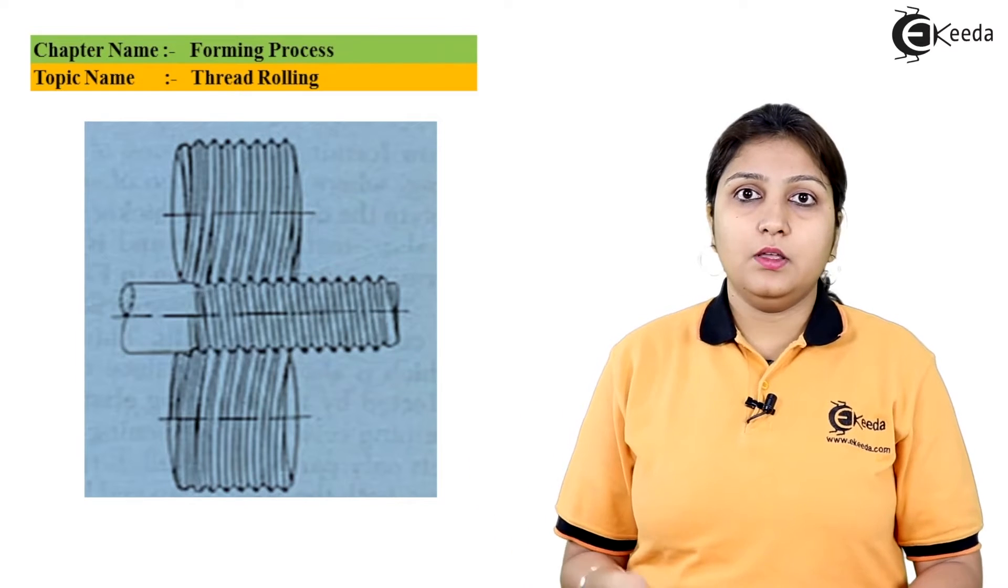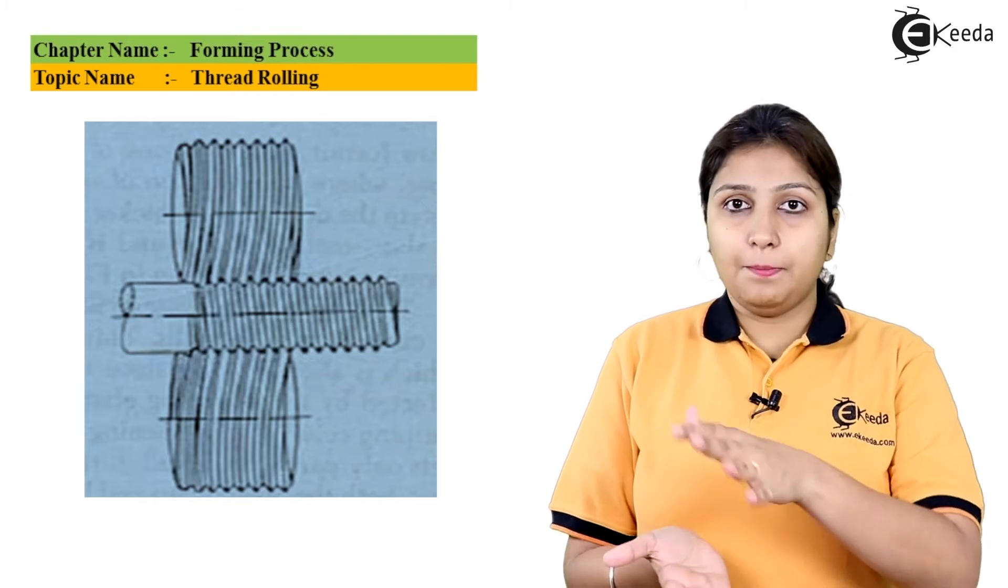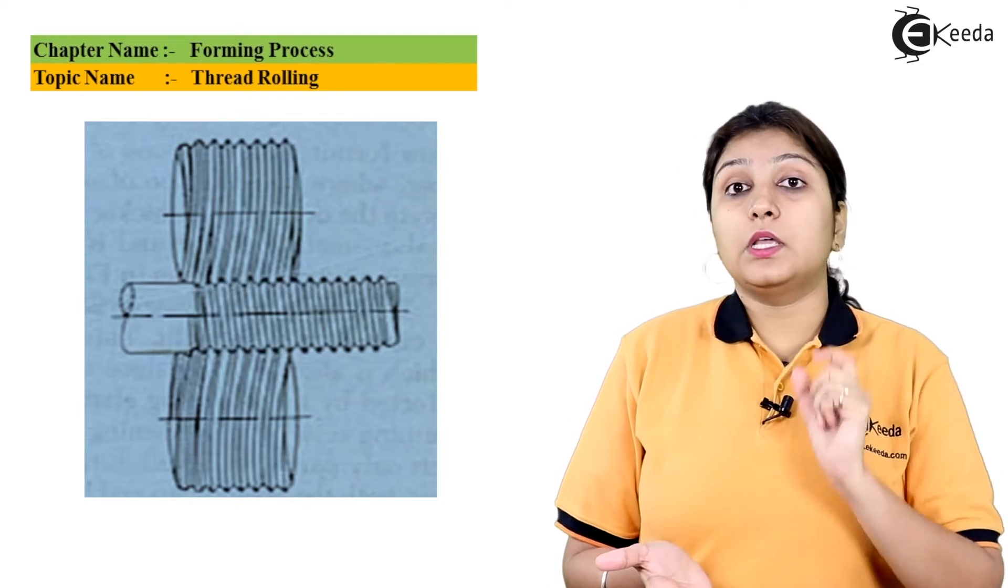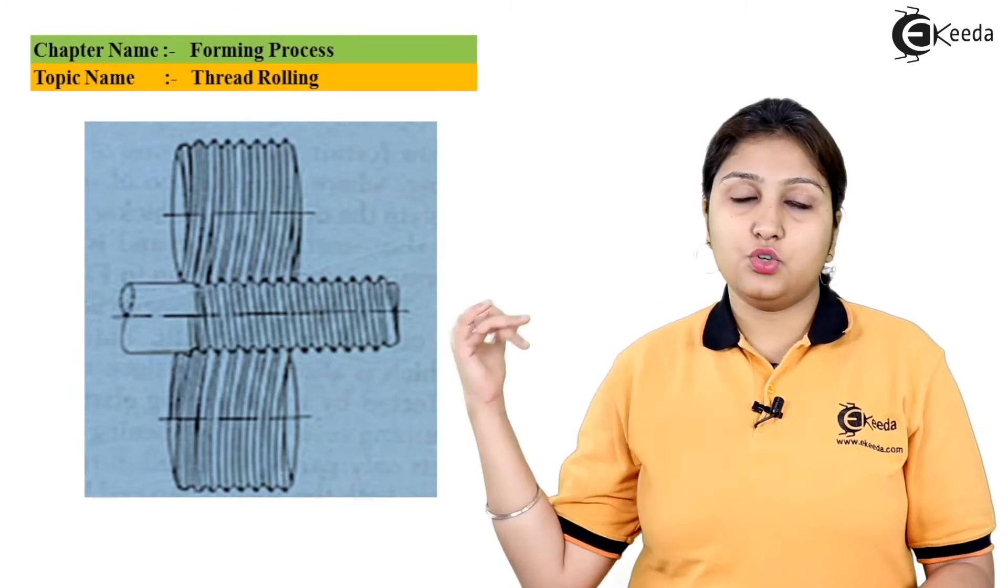Let's say it is a circular material. One die is down, the other die is up. Both the dies have threadings which are like crest and root kind of threadings shown in the diagram.